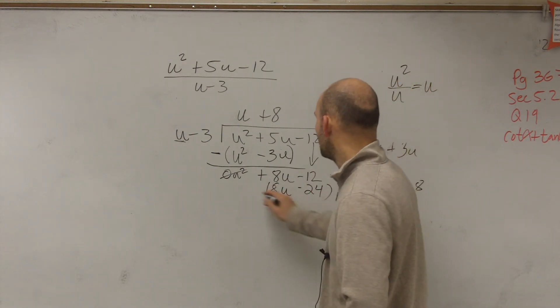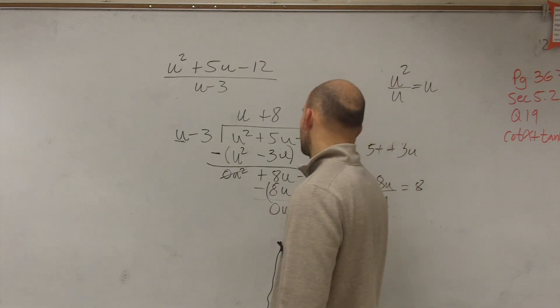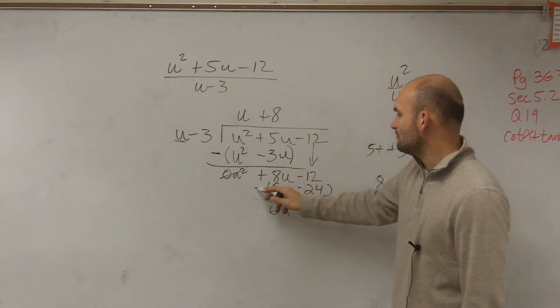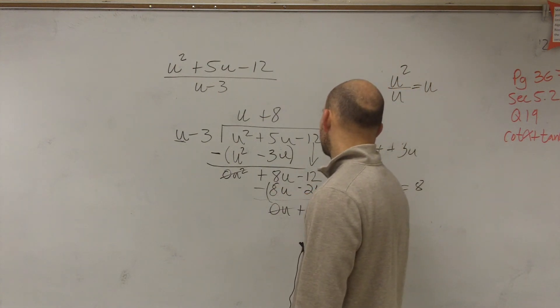Again, put in parentheses and subtract. 8u minus 8u is 0u. Negative 12 minus a negative 24 is going to be a positive 12.